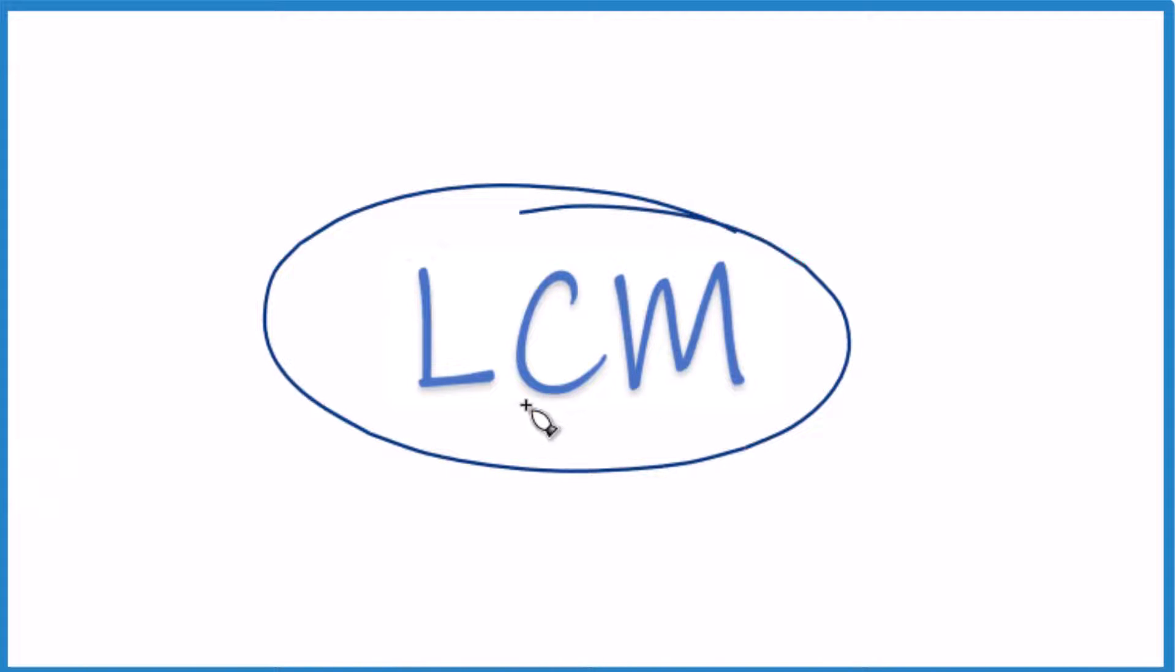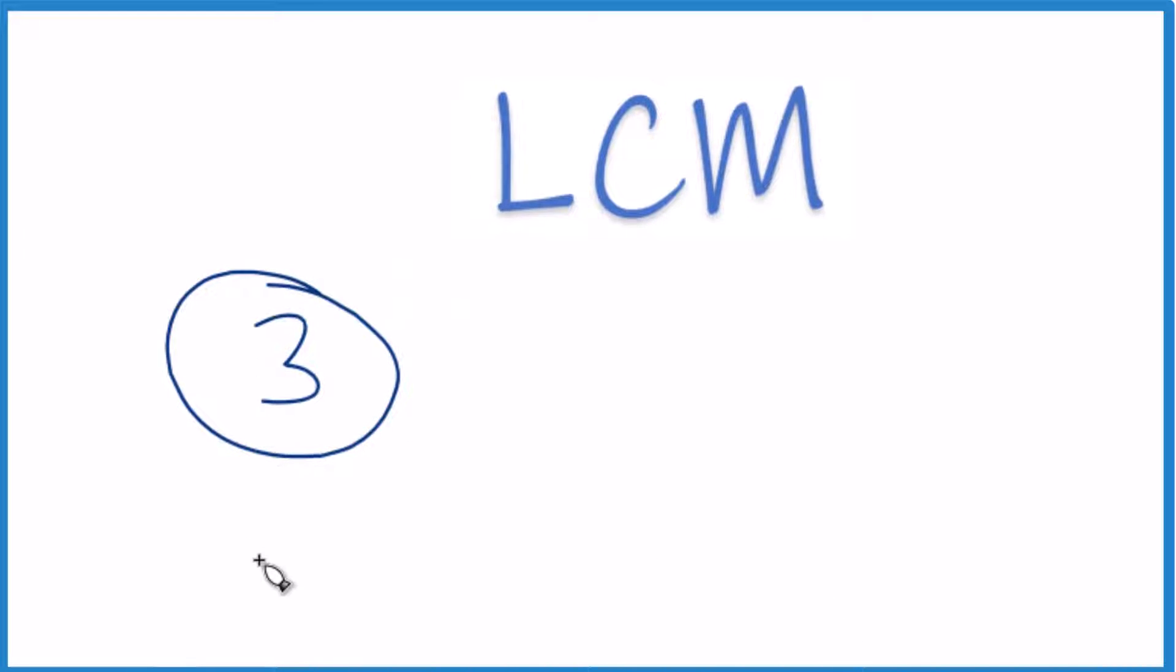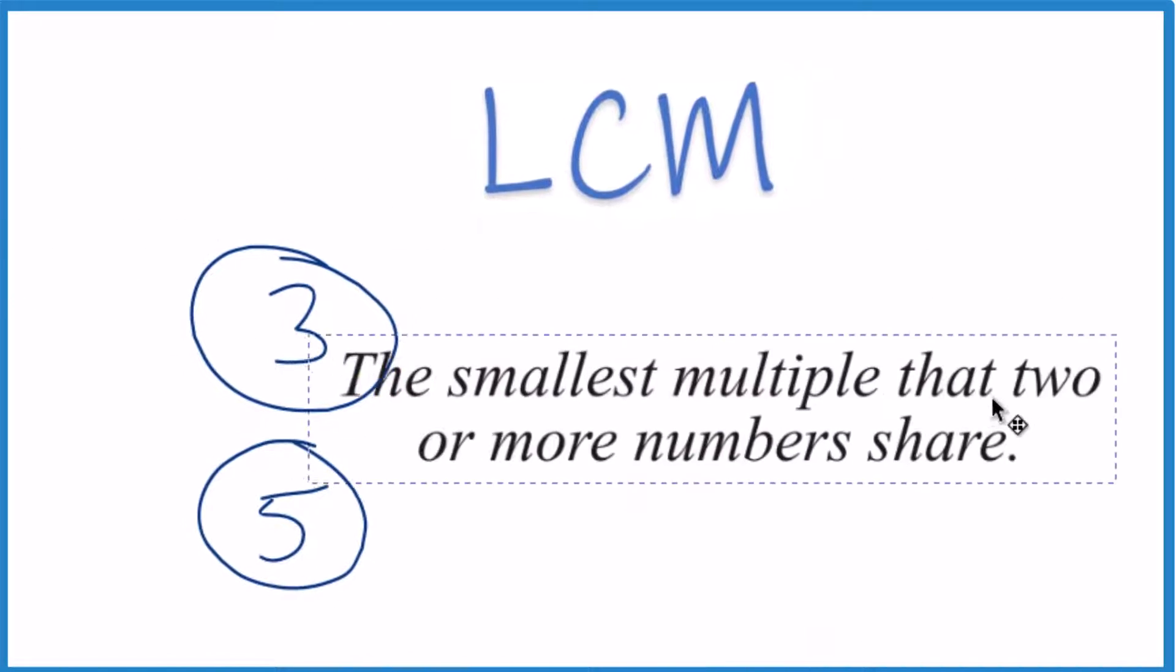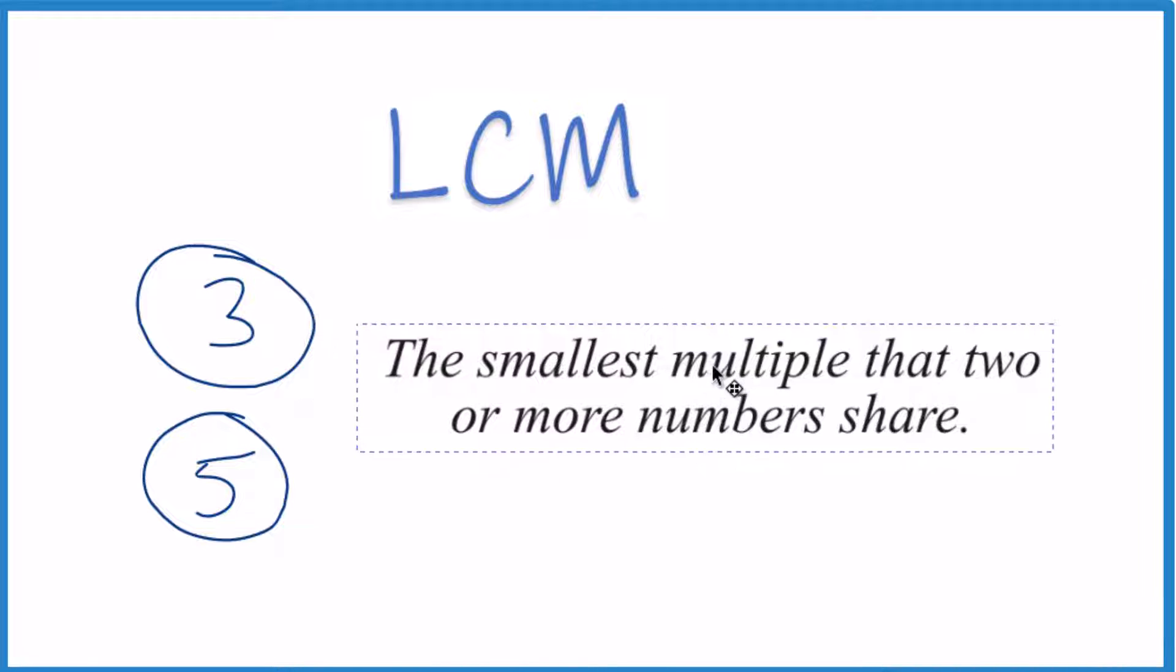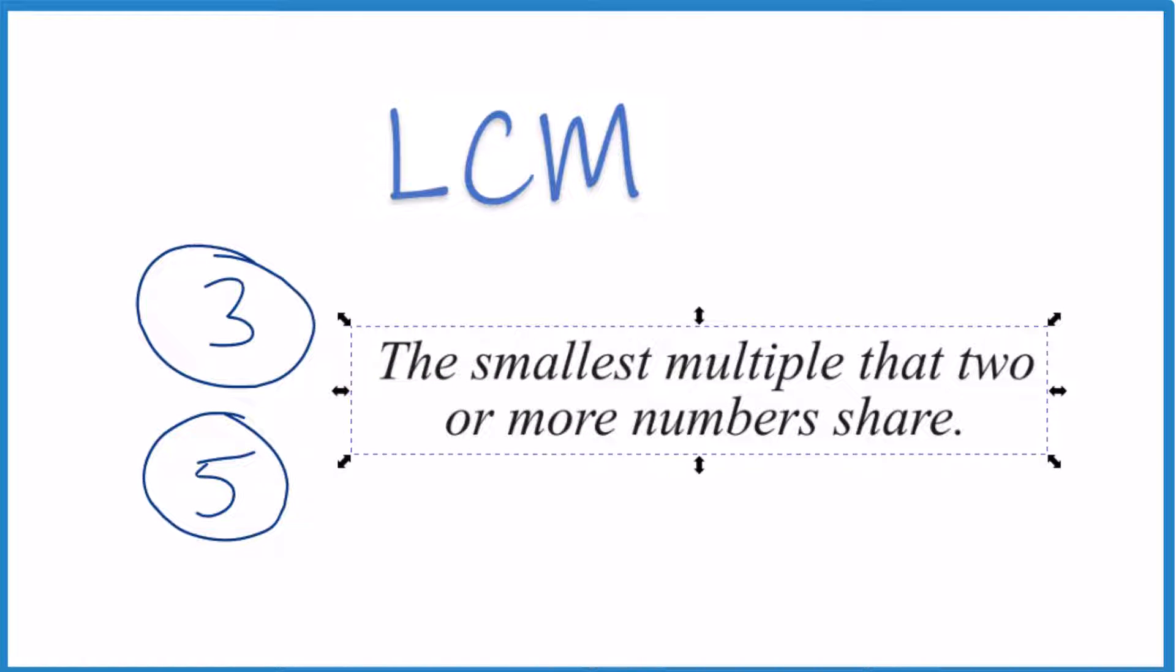Let's find the least common multiple, the LCM, for 3 and 5. So what we're looking for is the smallest multiple of 3 and 5 that both of these numbers share.